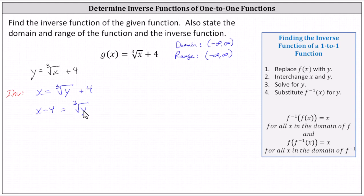And now to solve for y, we need to undo the cube root by cubing both sides of the equation, which gives us the cube of x minus four equals the cube of the cube root of y. The right side simplifies to y, giving us the cube of x minus four equals y.